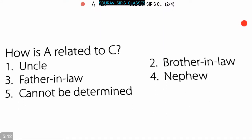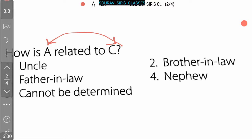The next question: how is A related to C? We have to find the relationship between A and C. From the diagram, we can easily say that A is the father-in-law of C. So option 3, that is father-in-law, is the correct answer.